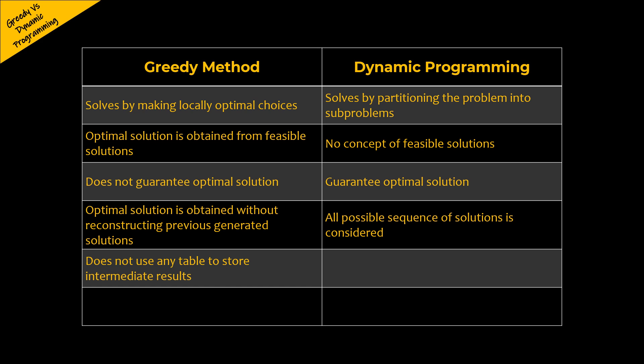The greedy method does not use any table to store the intermediate results. But whereas the dynamic programming approach uses tables kind of structure to store intermediate results, thus occupying more memory.